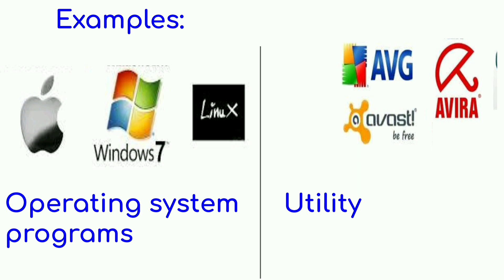Examples of system software include the Operating System. For example, Windows 7, Linux, Apple, and on our phones, Android — these are all operating systems.